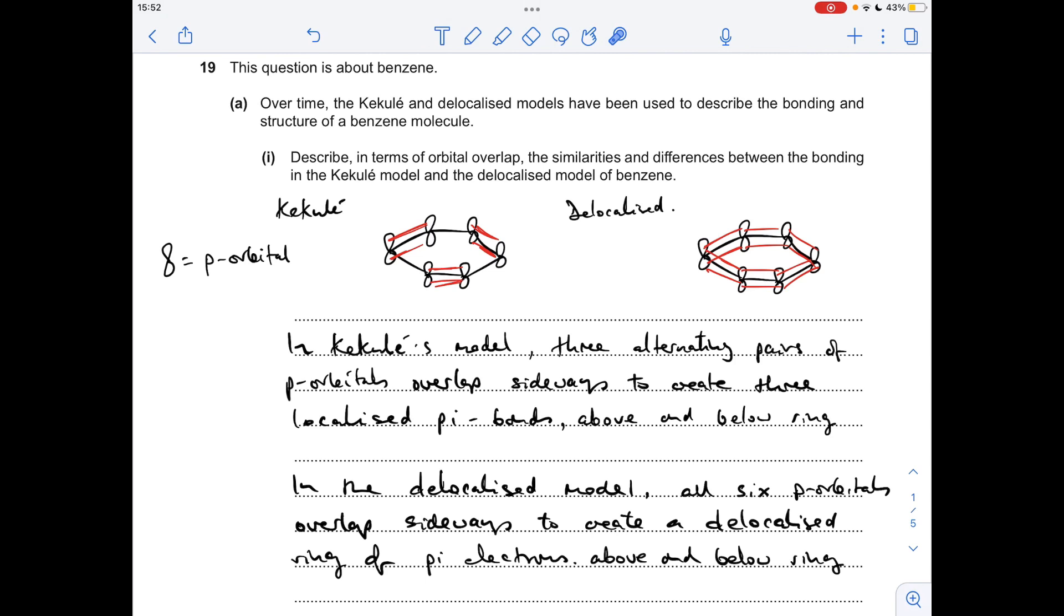Okay so in Kekele's model you can see you've got three alternating pairs of p orbitals and they're overlapping sideways to create three localised pi bonds. So basically a localised pi bond is a shared pair of electrons from the overlap of two p orbitals but the electron pair is shared between two carbon atoms. So you've got that happening three alternating times.